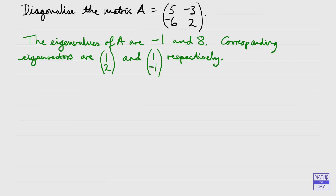Let's write down what we mean by diagonalising a matrix. We're looking for a matrix which will only have entries on the main diagonal; all the other entries are going to be zeros. We'll find that we can write A equal to a matrix P multiplied by the diagonal matrix D, and then that will be multiplied by the inverse of the matrix P.